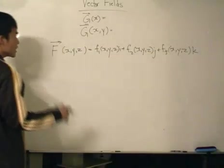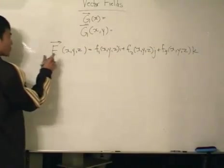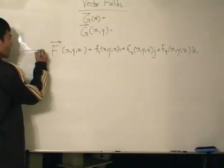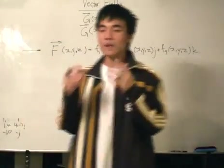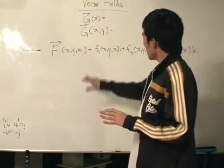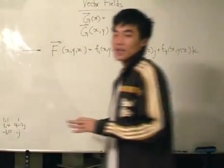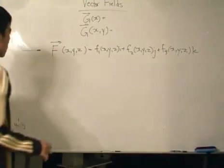So now having said that, we need to now give some sort of interpretation of what this really means. Vector field. Like I said, you give me the point, I give you a vector, so certain points in the space, there's a certain vector.